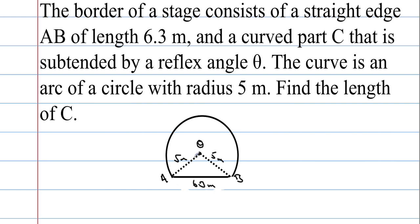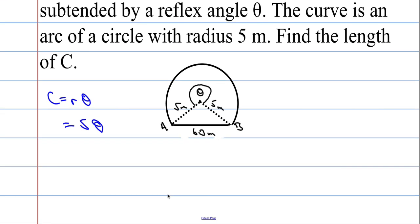Now it also tells us that it's subtended by a reflex angle theta, and the curve is an arc of a circle with radius 5. OK, so I'm going to mark the centre of the circle, which is round about there, and let's get the radii in, use a dotted line. Radii 5, like so, 5 metres. This was 6.3 metres. This is also 5 metres. And it says that this reflex angle is theta here, the reflex angle. We're asked to find this length here, this curved length C. We now need to work towards finding out what theta is.